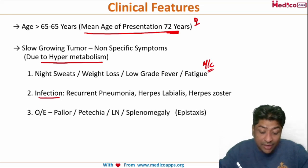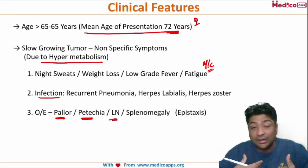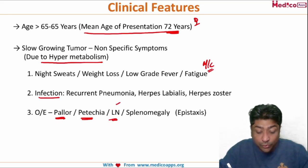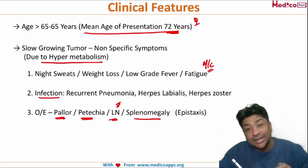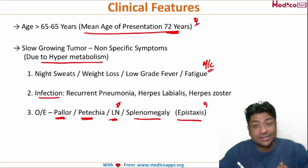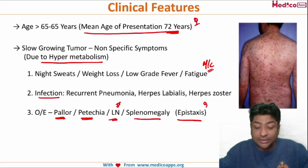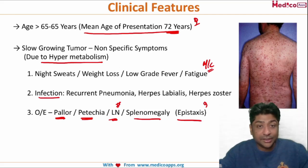On examination, the patient will have pallor and may have petechiae. Generally, the patient won't complain of enlarged lymph nodes, but examination can reveal enlarged lymph nodes or spleen. If platelets fall very low, the patient may present with epistaxis. Petechiae may occur due to the fall in thrombocytes. These are the clinical presenting features — an elderly patient with completely non-specific symptoms.